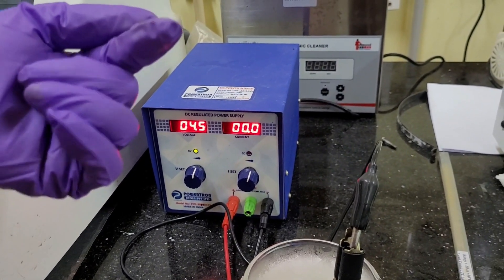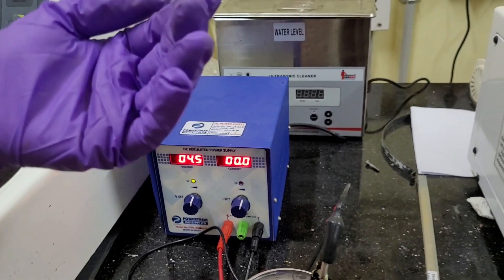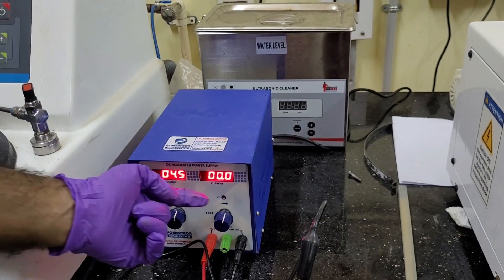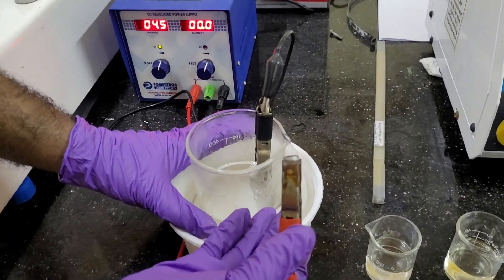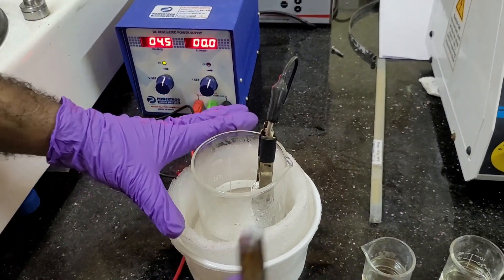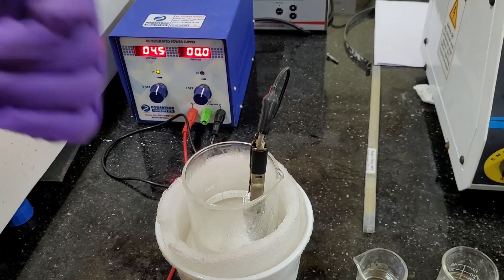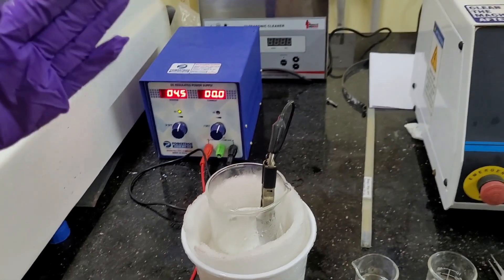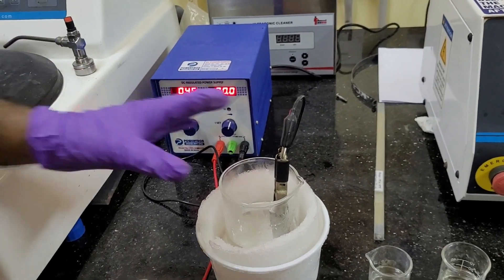And in this parameter, there are four different parameters. First one is the voltage. Second one is the current. Third one is the temperature, what we have achieved here. And the fourth one is the time, what we are going to use to do the electropolishing. So, these four parameters are very important to maintain or optimize.